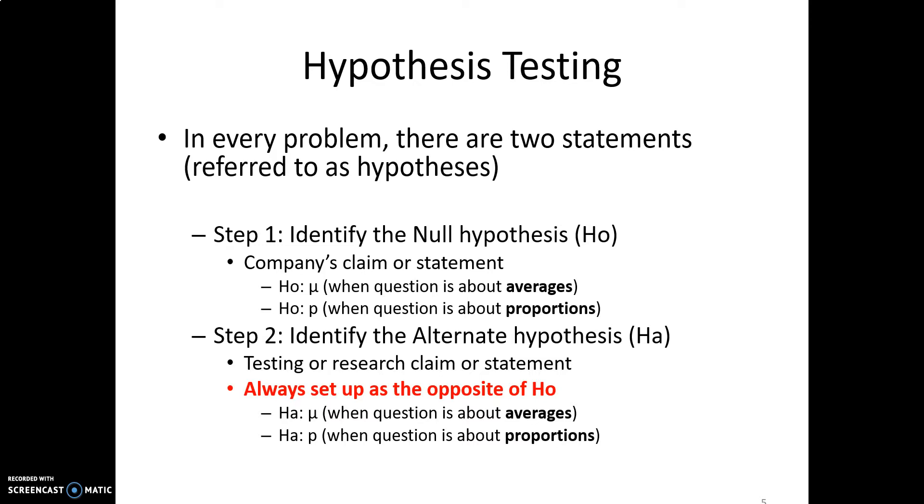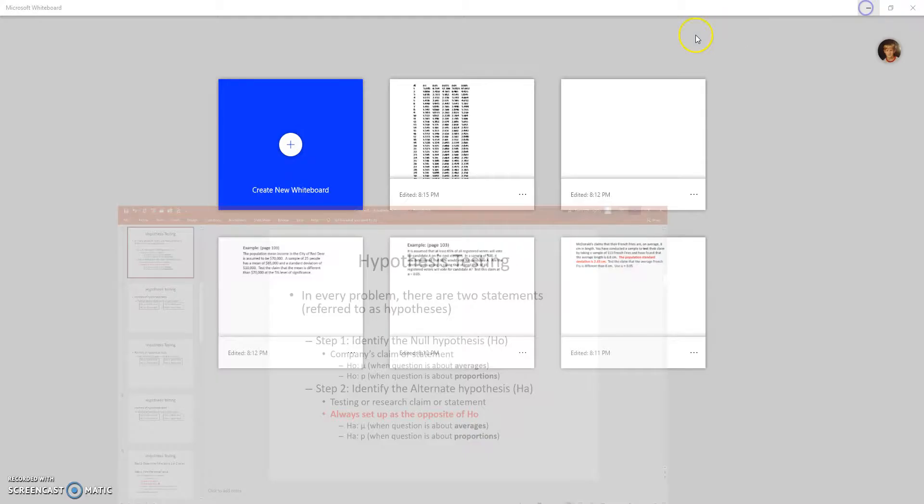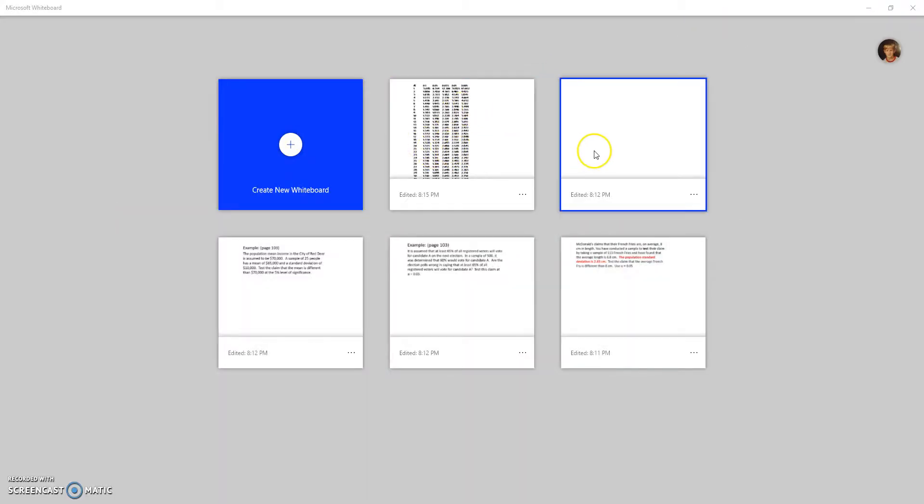So the alternate hypotheses, HA for the average and HA for the proportion, depending on the type of question. So let's go into our question to see if we know what the null hypotheses, H0, or the alternate hypotheses, HA.